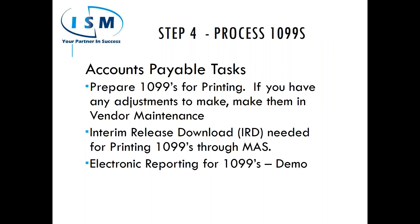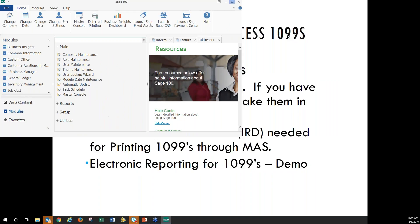For AP, processing 1099s: you can process 1099s within Sage 100. Go through vendor maintenance and make sure all vendor addresses are correct. Verify that the correct social security number or tax ID information is entered for each vendor you need to produce a 1099 for. You will need an IRD download to process 1099s in Sage, and you must be on a certain version to apply it.